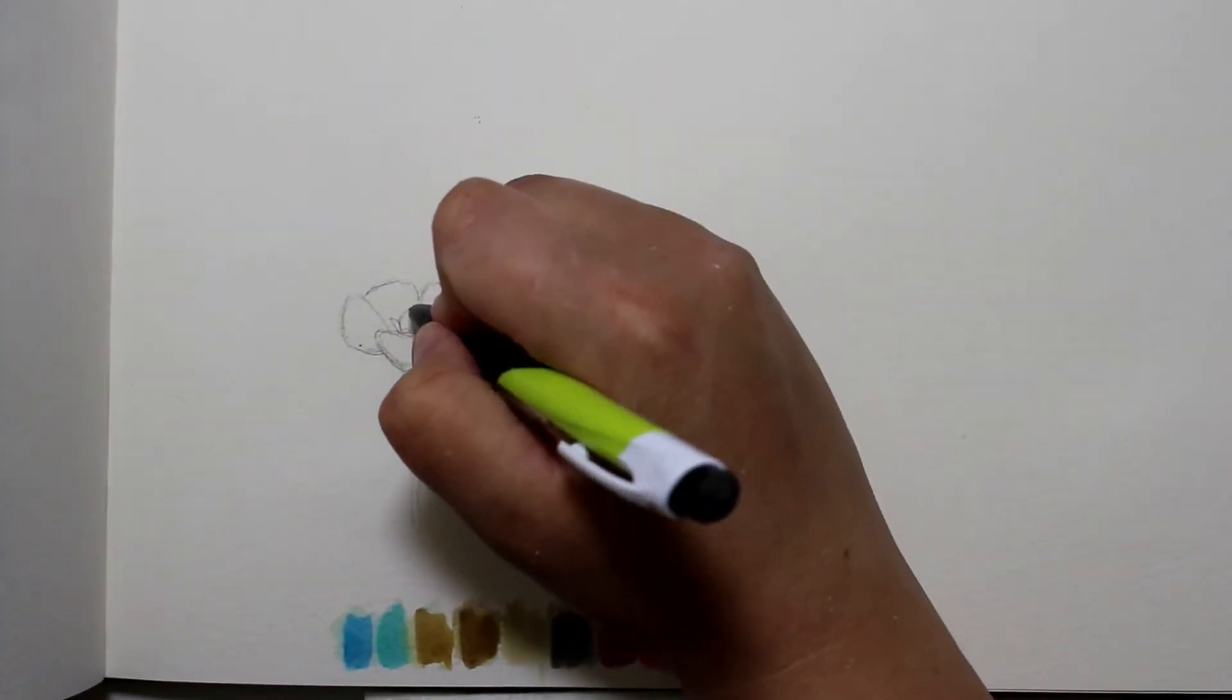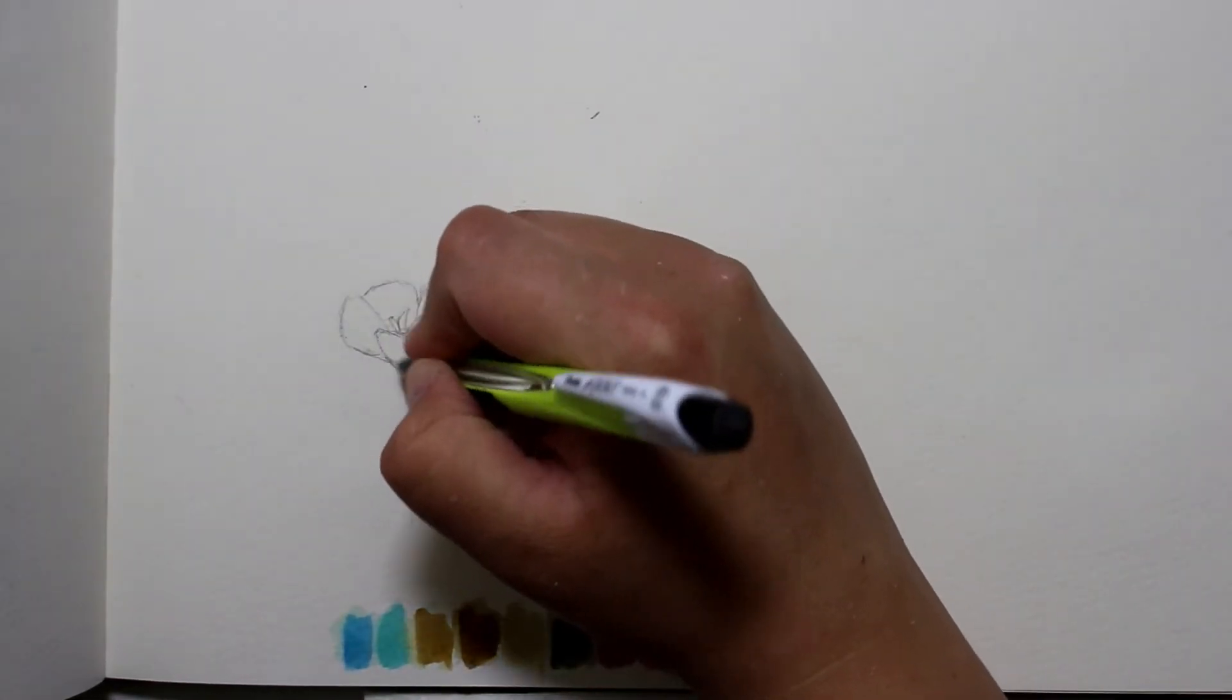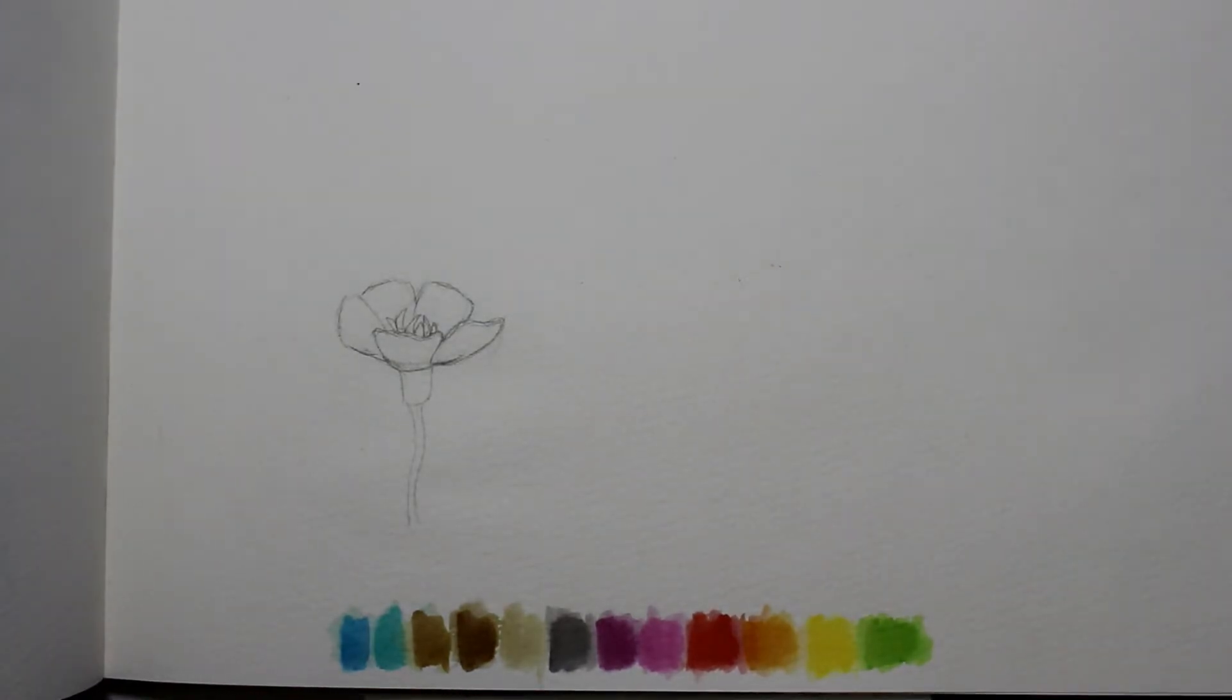So if you make a mistake, you can clean it up just a little bit. They don't dry permanently like an inktense block. With that being said, they are not as vibrant as inktense blocks either.